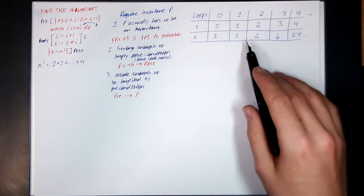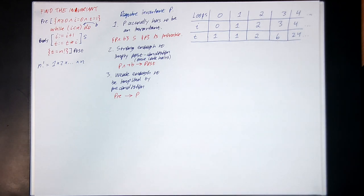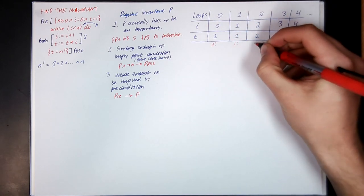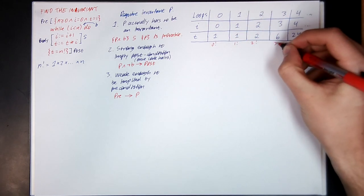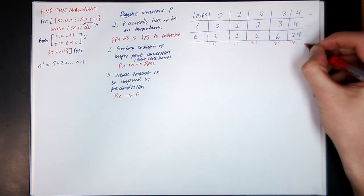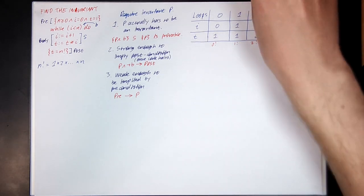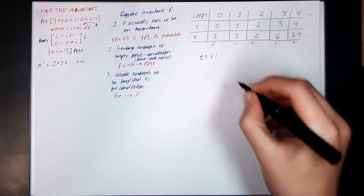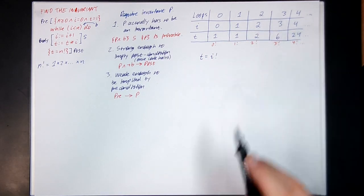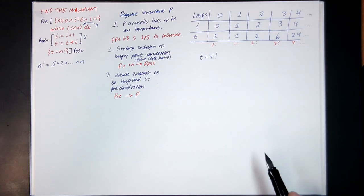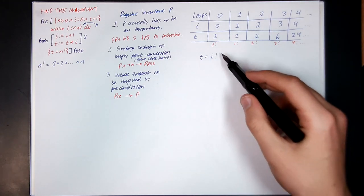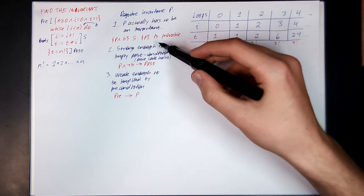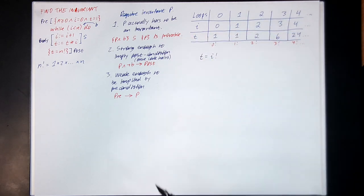If you look at this for a bit, you might recognize these as factorial numbers: 0 factorial, 1 factorial, 2 factorial, 3 factorial, 4 factorial, and so on. So it looks like a good choice for the invariant might be t equals i factorial, because that seems to be true while we're running the code — if it's true before we run the code, it's still true after the next loop, which indicates that property 1 is probably going to hold.